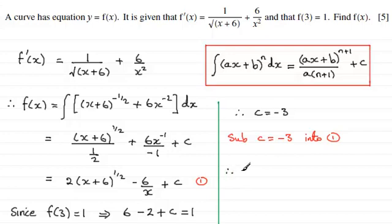Well we therefore end up with f of x equaling 2 times x plus 6 to the power half or you could write that as 2 times the square root of x plus 6. Up to you. Minus 6 over x. And then plus c, c being adding minus 3 just gives us minus 3. And there you go.